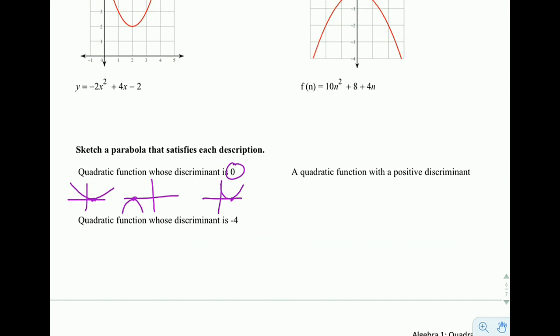So kind of carry that same idea with you as you do it for a positive discriminant and one over here that is negative. Don't worry too much about exactly what the value is. We're just sketching rough graphs right here with no numbers on it.